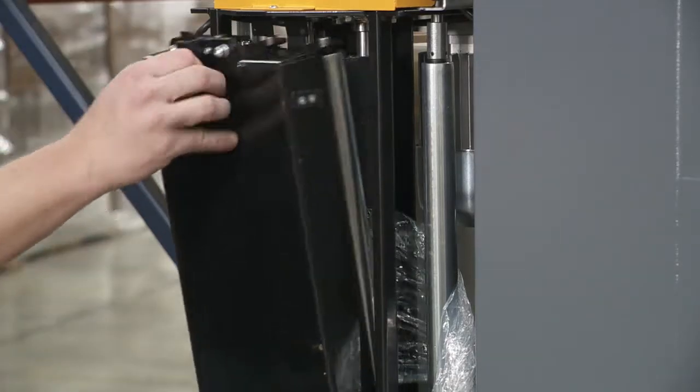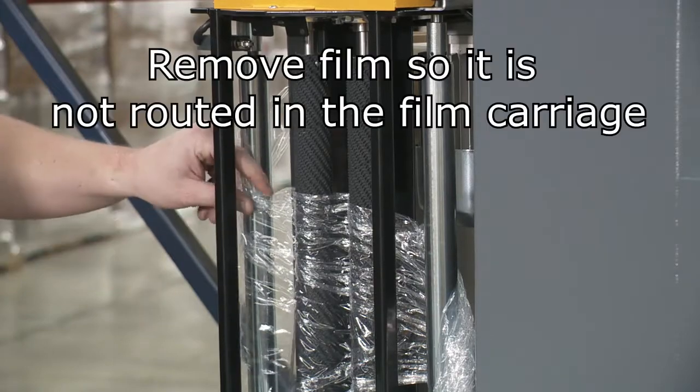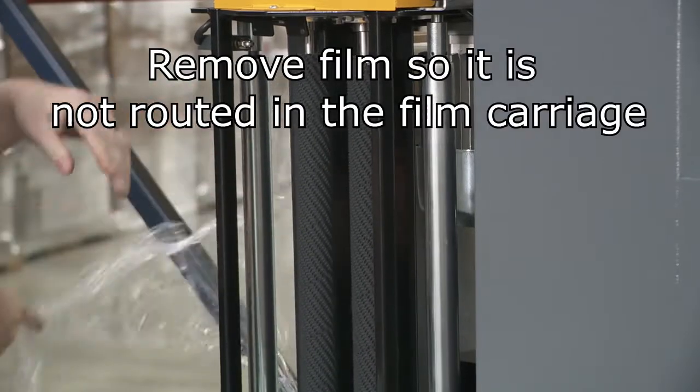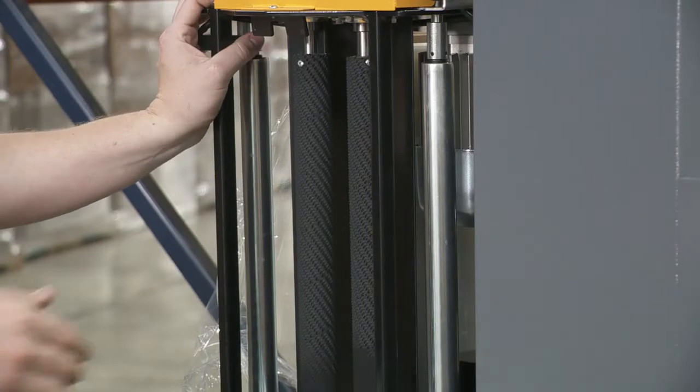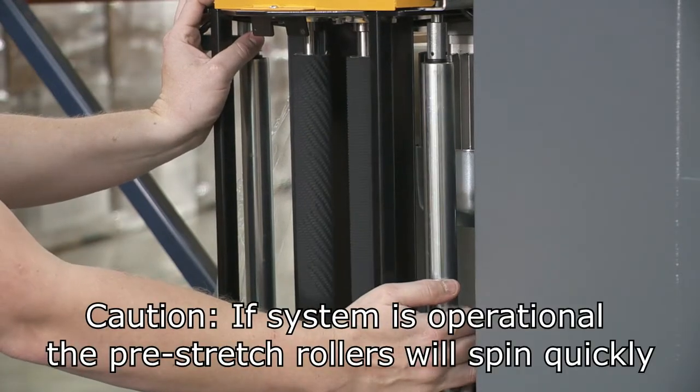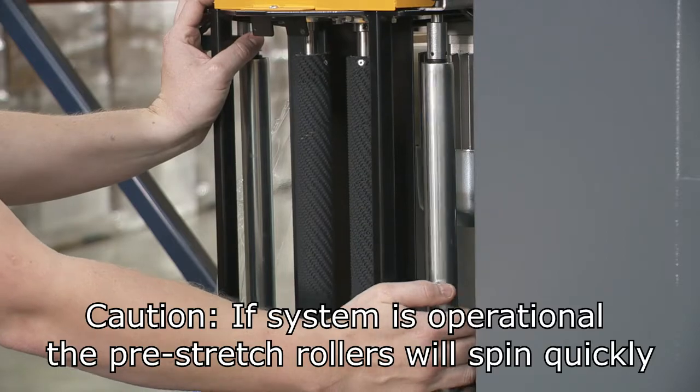To test if the door switch is operational, open the film door and engage the switch with your left hand. Then pull gently on this roller. If the motor spins the rollers, then it is likely that the switch has been bumped slightly out of position.